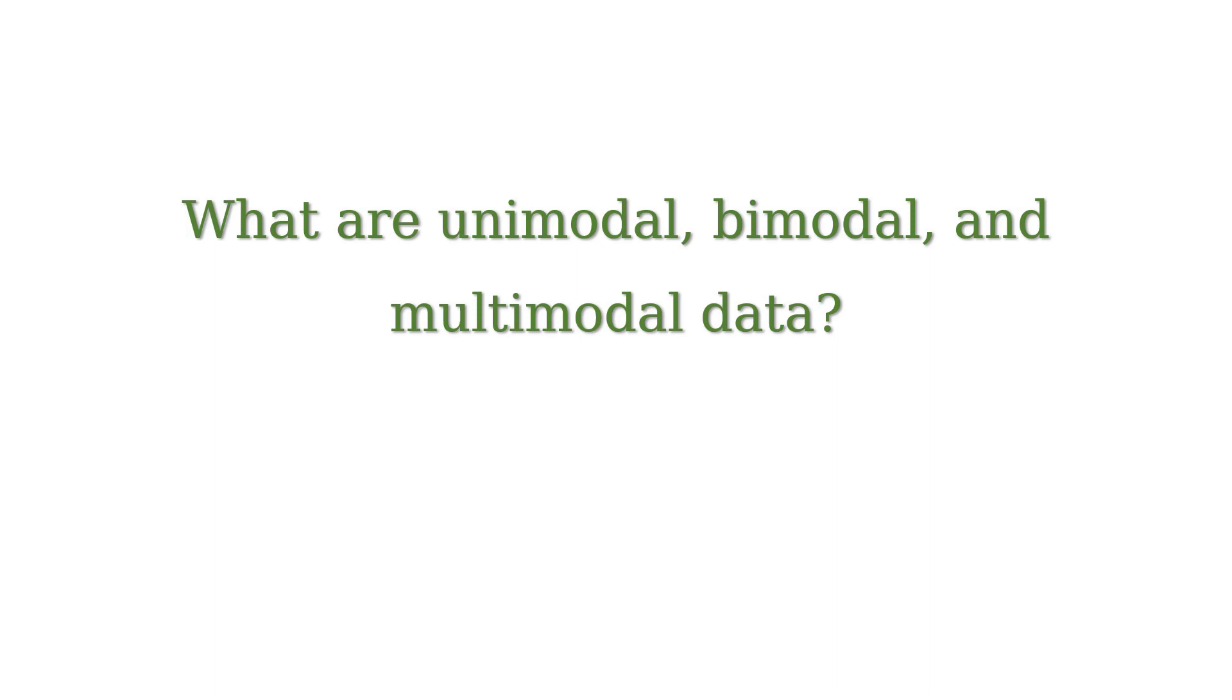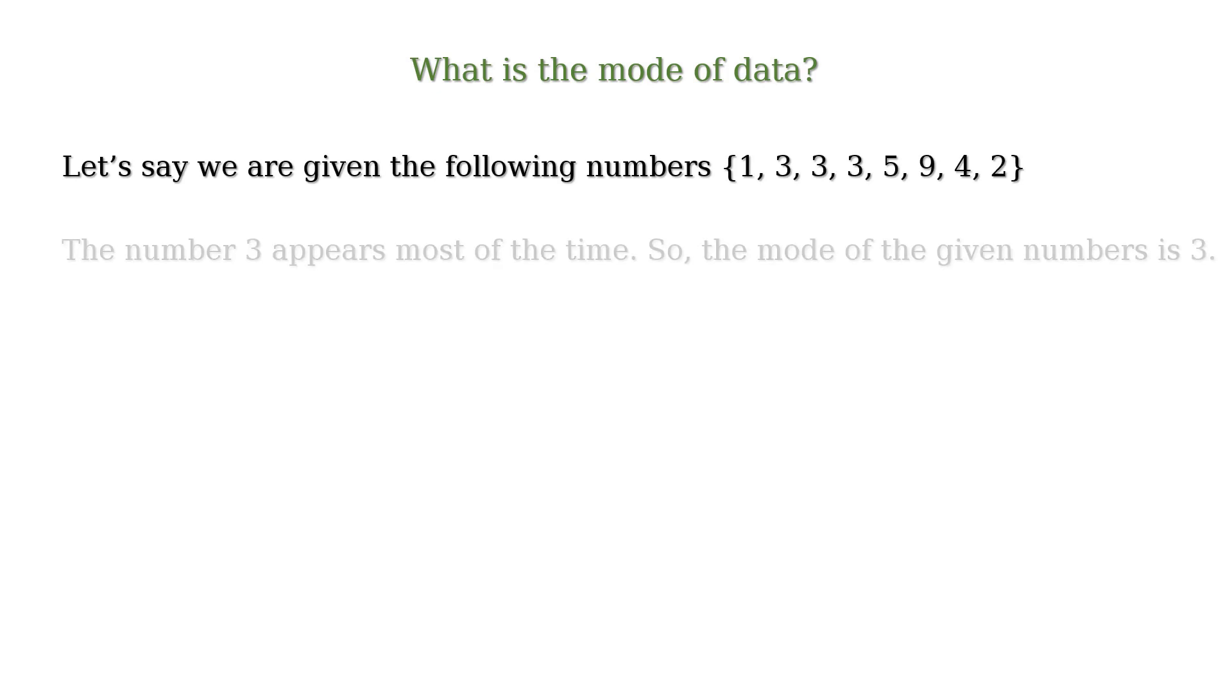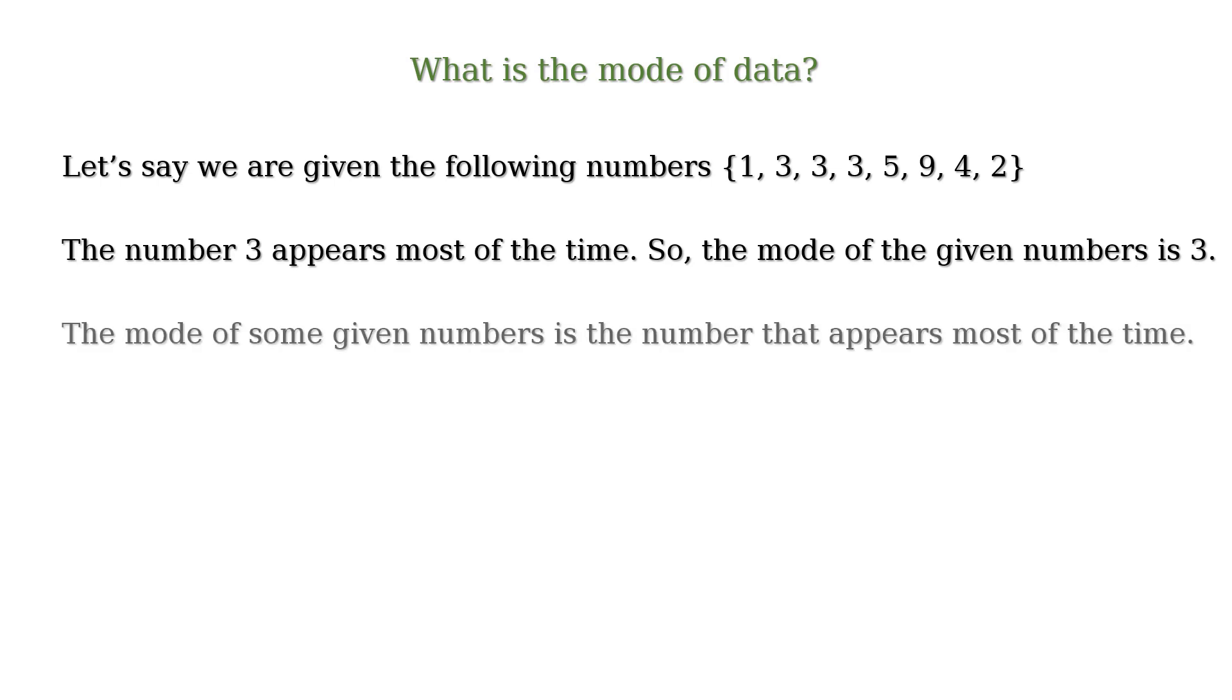But before we understand unimodal, bimodal and multimodal data, let's try to understand what mode of a data is. Let's say we are given the following numbers. Here the number 3 appears most of the time. So the mode of the given numbers is 3. In other words, the mode of some given numbers is the number that appears most of the time.